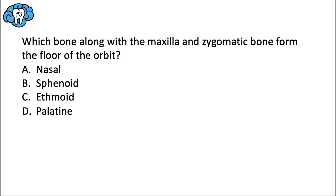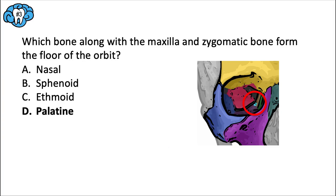Question three: which bone, along with the maxilla and zygomatic bone, forms the floor of the orbit? The nasal bone is often a distractor because it's close by, but it's not part of the orbit. The sphenoid bone is part of the posterior wall, not the floor. The ethmoid bone is part of the medial surface. The palatine bone contributes the smallest component to the orbit but does involve part of the floor — so D is correct. You can see that the palatine bone, that little teal part, along with the zygomatic and maxilla, form the floor of the orbit.